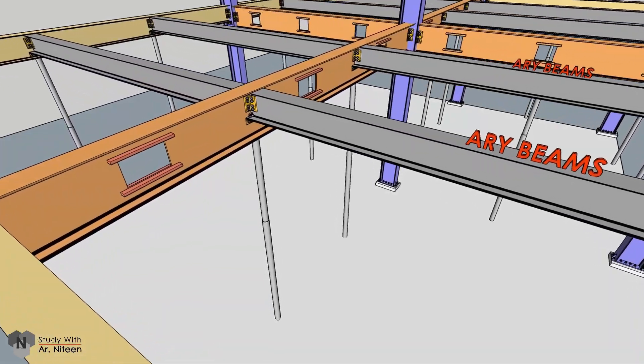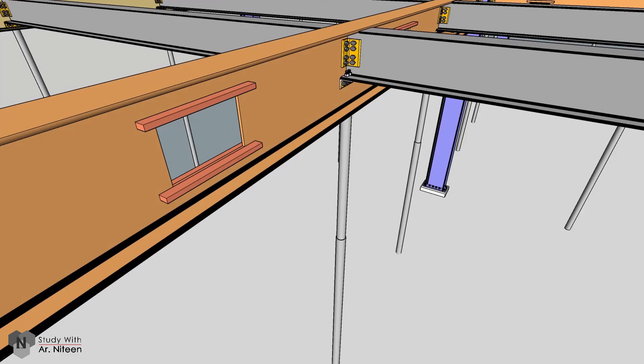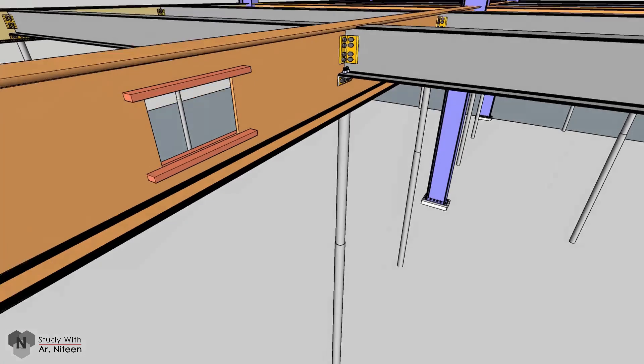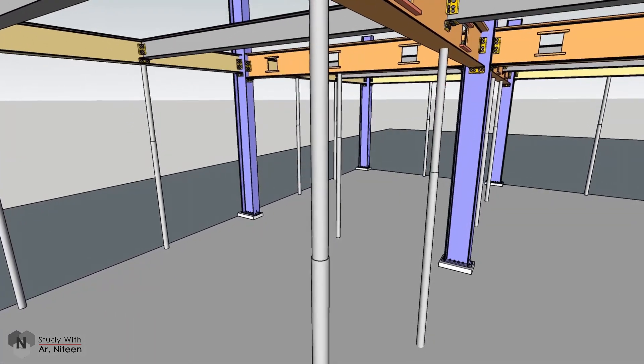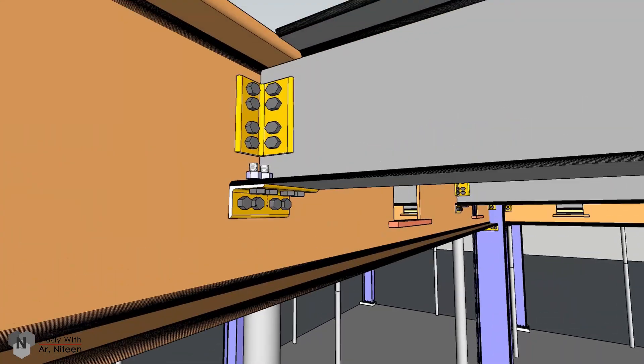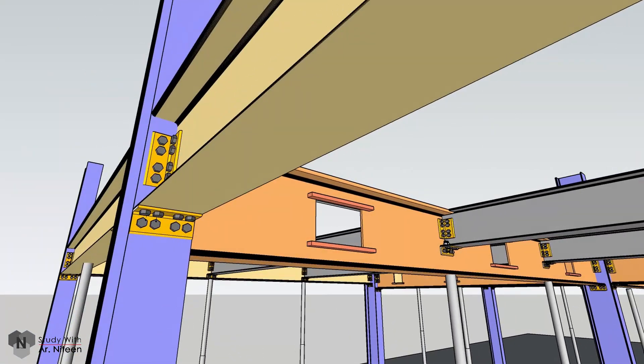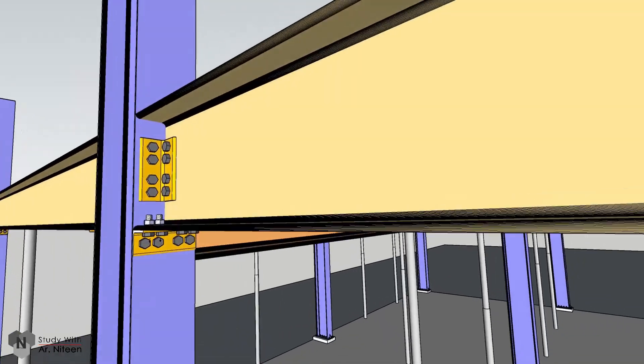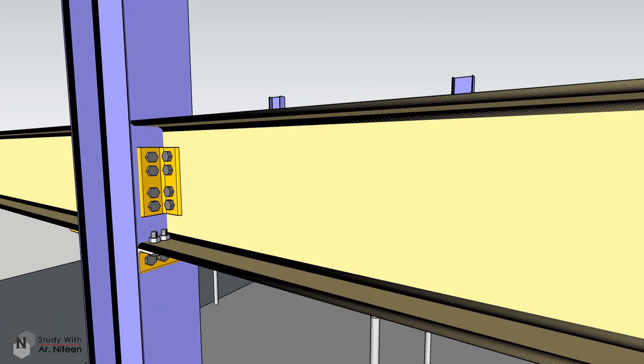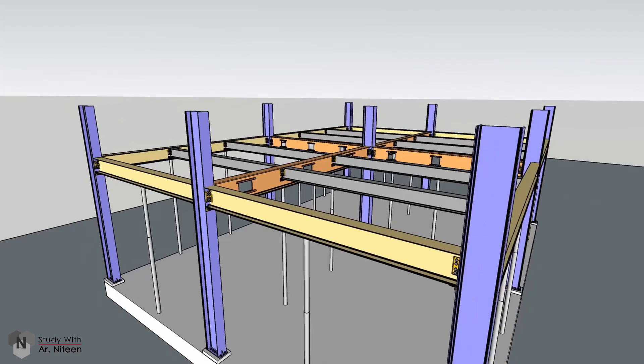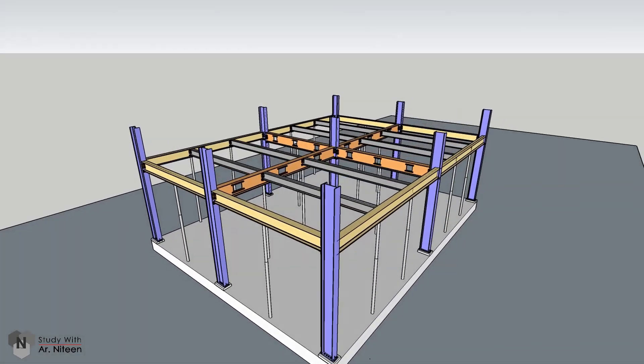In the secondary beams, cutouts are given to provide the mechanical services. The joint between the primary beam and the secondary beam should be rigid. The joinery is done with angle cleats either bolted or welded. The joinery between the beam and the column should also be rigid. The joinery is done with angle cleats at the bottom as well as on either side of the flange or I-section. The cleats are either bolted or welded.